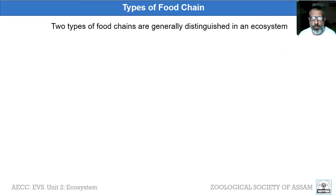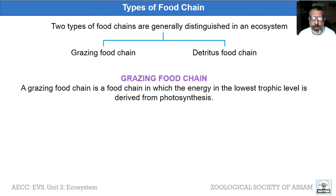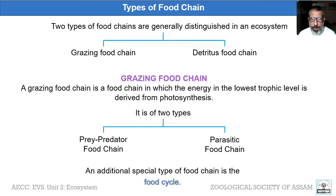Generally two types of food chains are distinguished within an ecosystem: the grazing food chain and the detritus food chain. Within the grazing food chain, there are two subtypes: the prey-predator (or predator-prey) food chain and the parasitic food chain. There is also a special case known as a food cycle. We will look into the prey-predator food chain first, then the parasitic food chain, then the detritus food chain, and finally the food cycle.